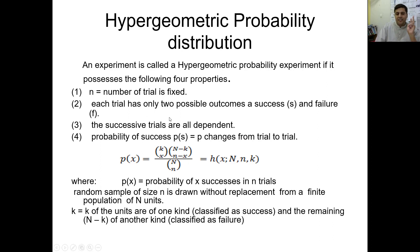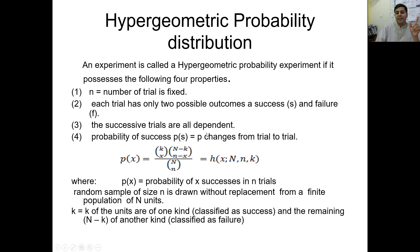The most important thing to remember: the first two properties are the same as binomial distribution, but in hypergeometric, the trial will be without replacement, while in binomial the trial will be with replacement. In binomial, the trial will be independent; in hypergeometric, the trial will be dependent. The probability of success will be fixed in binomial but will change from trial to trial in hypergeometric distribution.